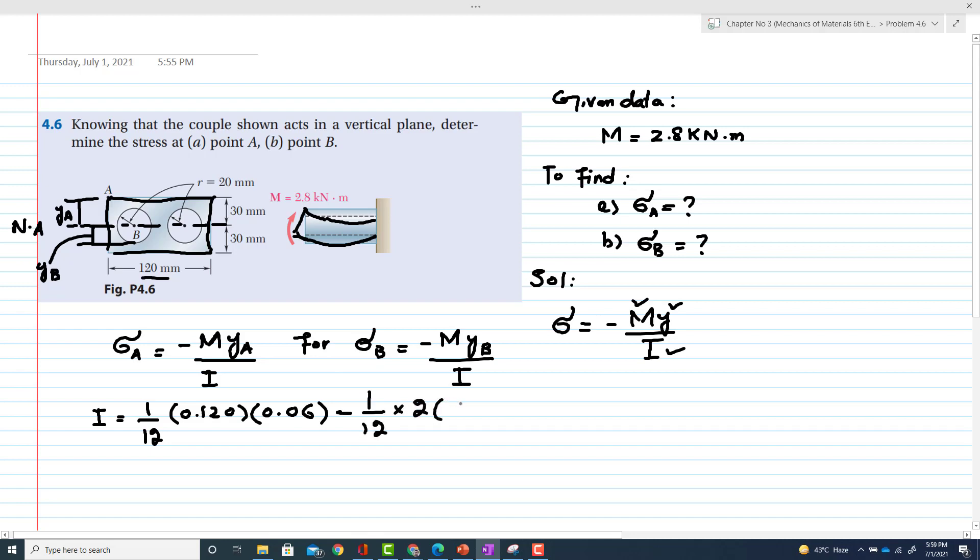The radius for a single hole is 20 mm. If you solve this, the value of I for the cross section will be 2.139 × 10⁻⁶ m⁴.